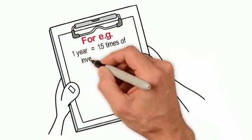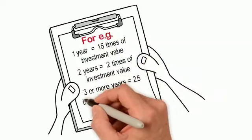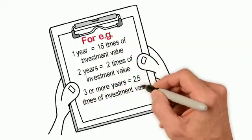For example, one year equals 1.5 times the investment value, two years equals 2 times, and three or more years equals 2.5 times the investment value.